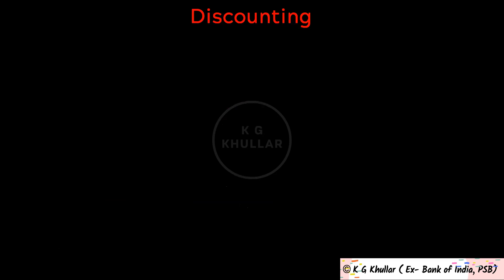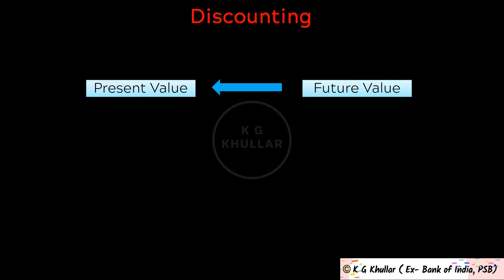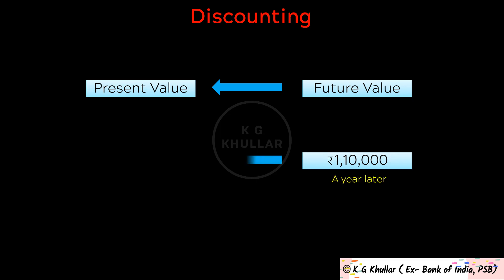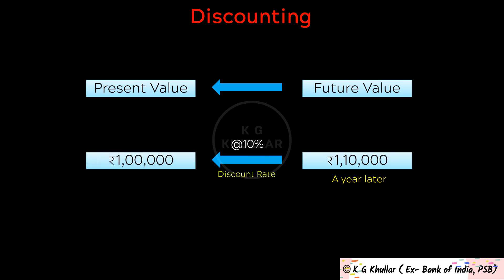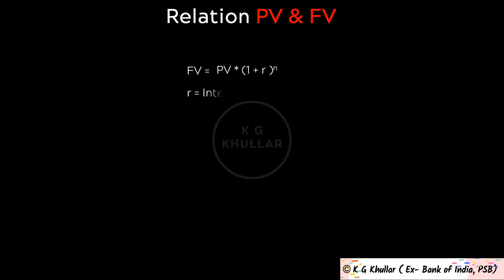You will also hear the term discounting. Discounting is basically converting the future value into present value. If we are going to receive Rs. 1 lakh 10,000 a year later and want to know its value in today's terms, that is discounting. We are converting future value into present value, and this 10% is our discount rate. In short: Future Value equals Present Value multiplied by 1 plus r raised to the power n, where r is the interest rate and n is the number of years.